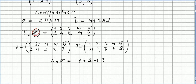This composition of permutations is not commutative. Doing it the other way: one goes to four and four goes to one, so 1 maps to 1. Two goes to one and one goes to two, so 2 maps to 2. The result is (1, 2, 5, 3, 4) — different from before. So here is the transposition composed with the permutation, and here is the permutation composed with the transposition.